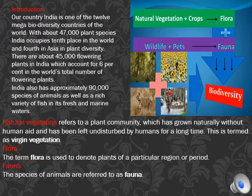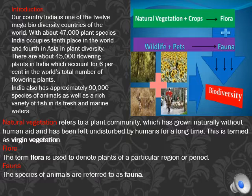India stands in the 12th position in megabiodiversity and is in the 10th position in the world, having 47,000 species, and the fourth position in Asia by having 45,000 flowering plants — that is 6% of the total number of flowering plants in the world — and 90,000 species of animal as well as fish in marine water.